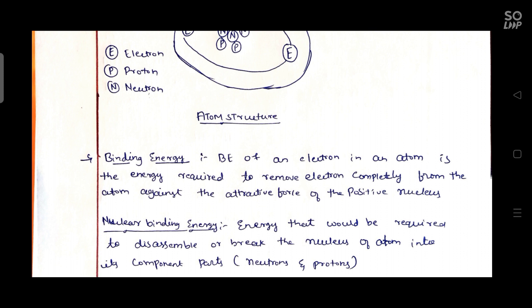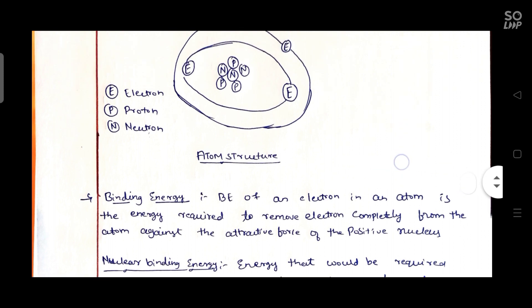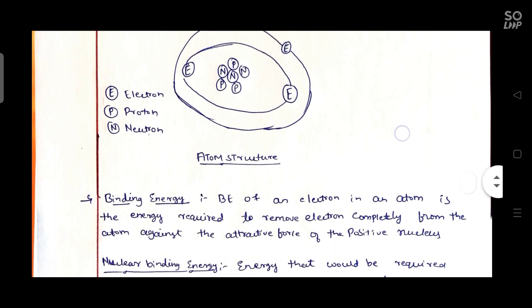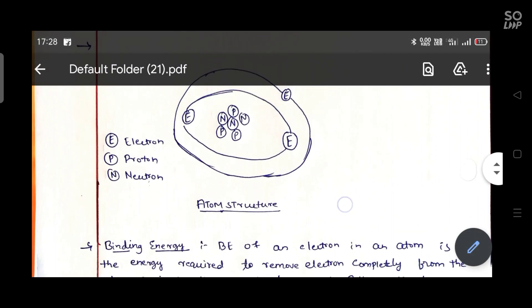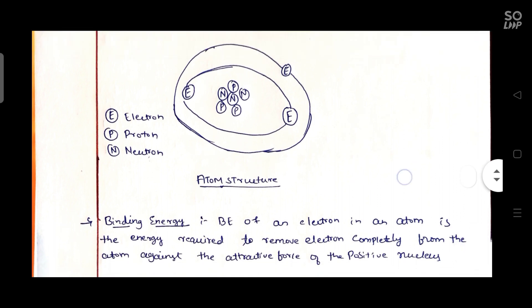Binding energy is the energy required to remove electron completely from the atom against the attractive force of the positive nucleus. It's one type of energy that removes the electron completely from the atom against the attractive force of the opposite nucleus.